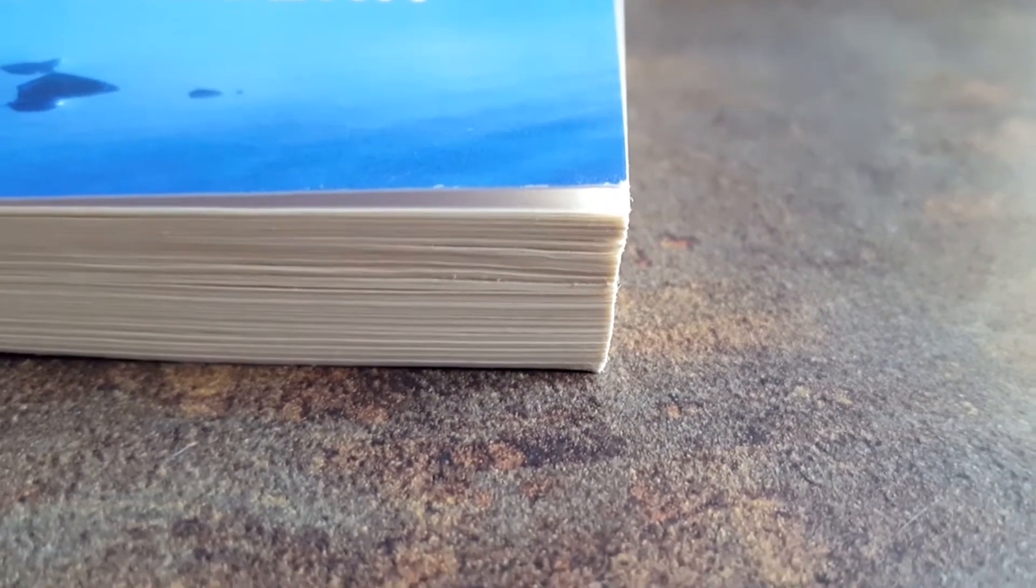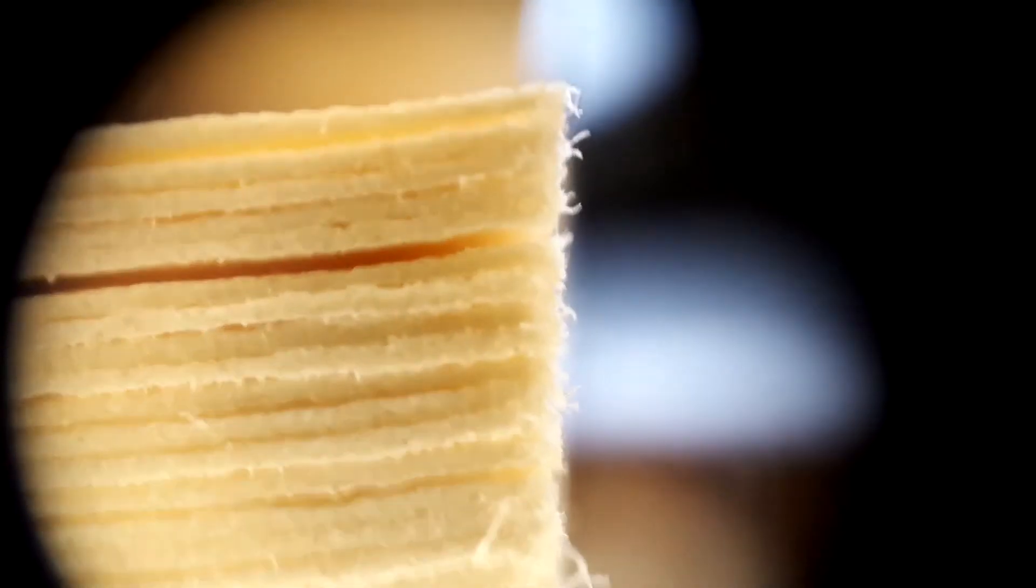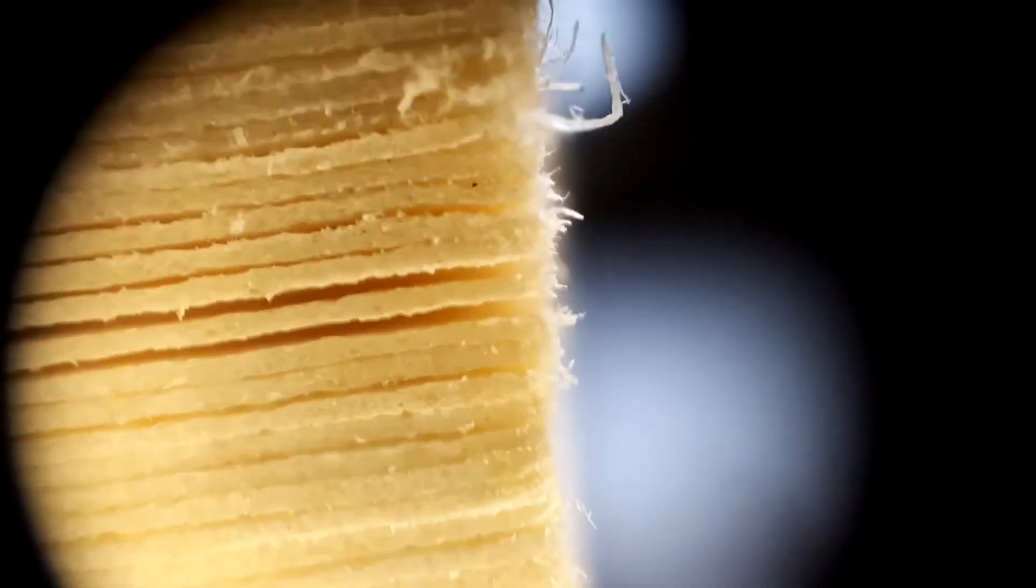And here we have some book paper. They look a little bit like cheese slices I think. Damn, they are jagged. I didn't do that. No wonder you can get a paper cut.